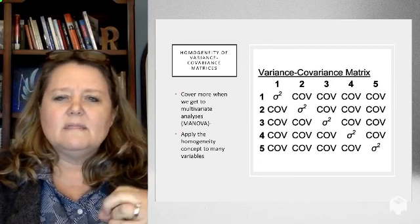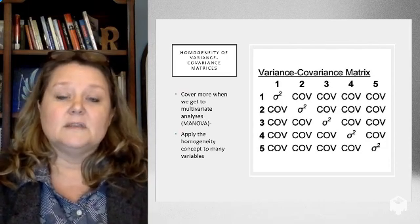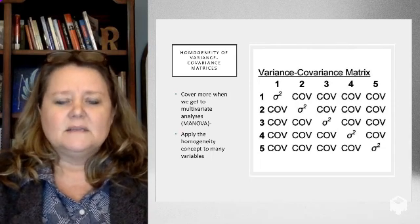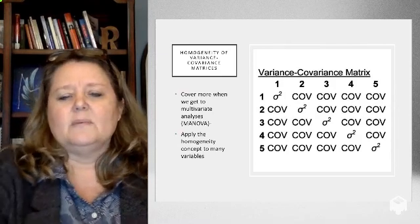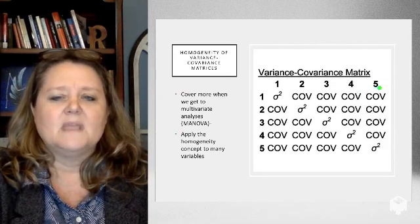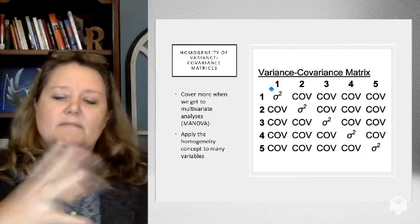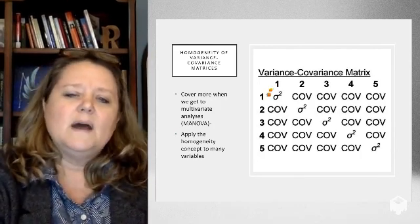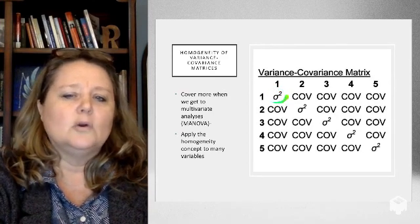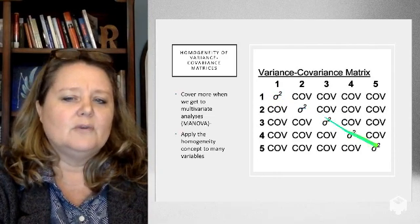When we get to the concept of MANOVA, this is where this assumption particularly applies. When you have multiple variables - here we have a matrix with five variables (1, 2, 3, 4, 5) - and you're doing analysis with five dependent or continuous variables together, what you want is variance for each to be a nice normal spread with good equal variance between all variables. They should all have similar variance. Omega is the Greek letter typically used for variance.